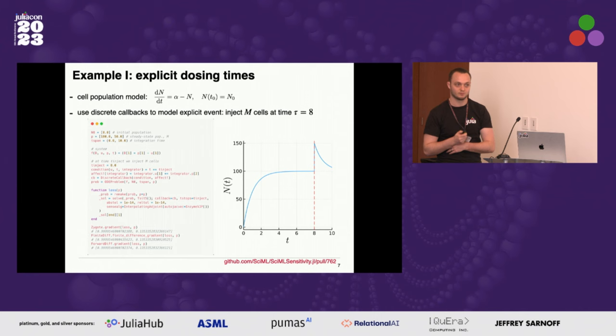This is all implemented now inside SciML sensitivity. We have examples for toy problems, like these cell population models where we have a simple ODE and we inject some cells at a defined time in the beginning. We can write down the code and compute the sensitivity, the derivative of the final state with respect to the parameter alpha. This is the forward evolution of the model, and we can check that this agrees with finite differences, forward mode AD, or discrete reverse mode applied on the solver operations. One nice thing that landed this year is we can now use Enzyme inside continuous adjoint methods, which highly improves performance.